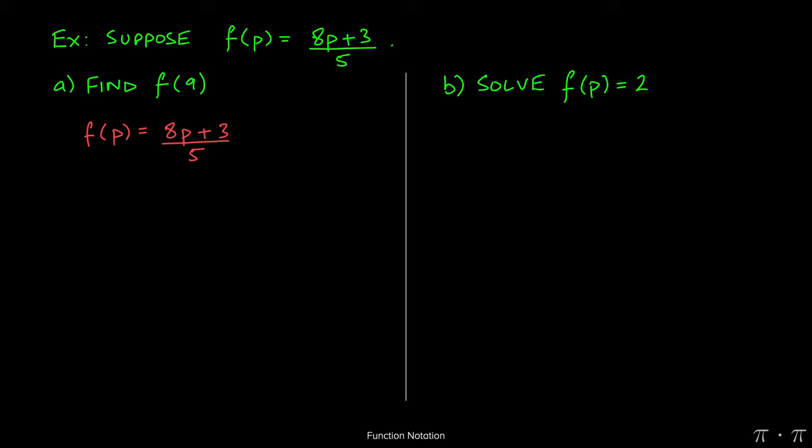So notationally we replace the p's in the equation with the number 9. We write f of p as f of 9, and 8 times p turns into 8 times 9 while the 3 and the 5 just come along for the ride.